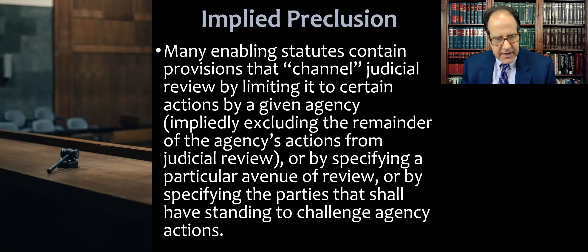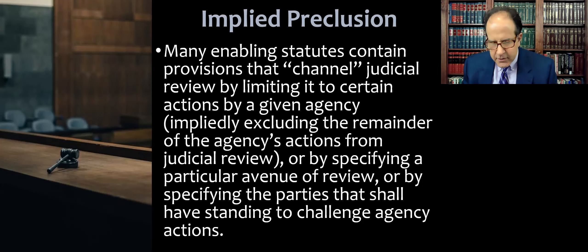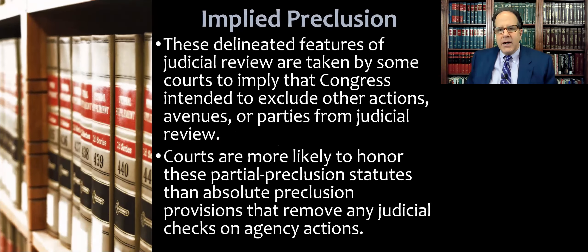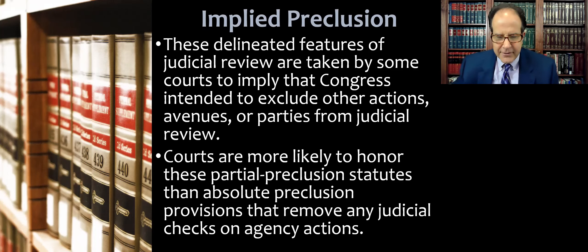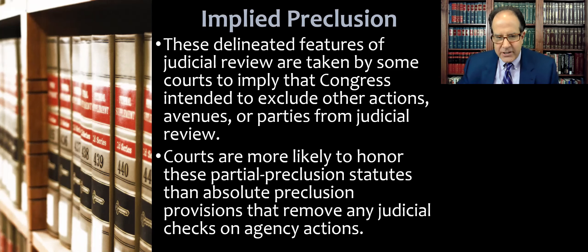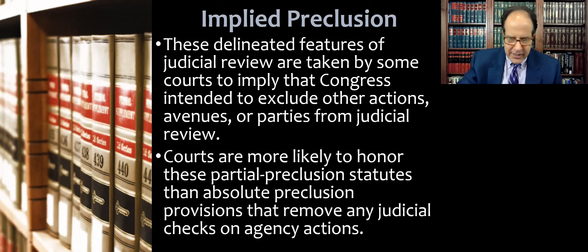Or it may specify a particular avenue of review — like a lot of statutes create the D.C. Circuit Court of Appeals as a court of origin for lawsuits — or by specifying that certain parties and not others have standing to challenge agency actions. These delineated features of judicial review are taken by some courts to imply that Congress intended to exclude other actions, avenues, or parties from judicial review. Courts are more likely to honor these partial preclusion statutes than absolute or sweeping preclusion provisions that remove any judicial checks on executive branch agency action.